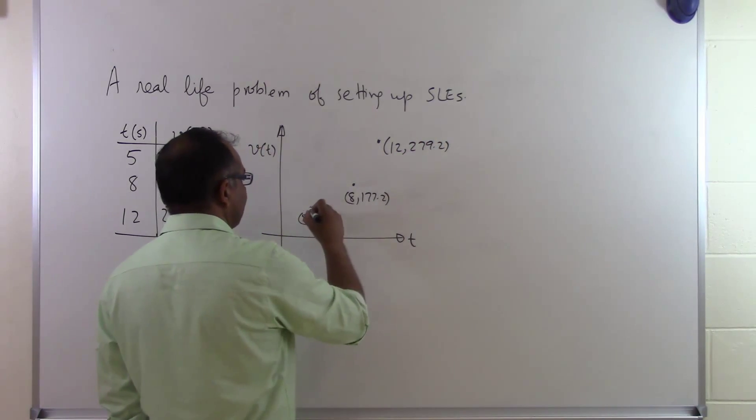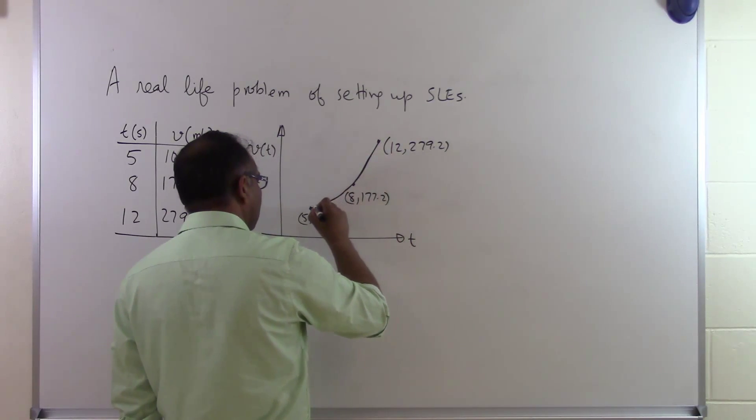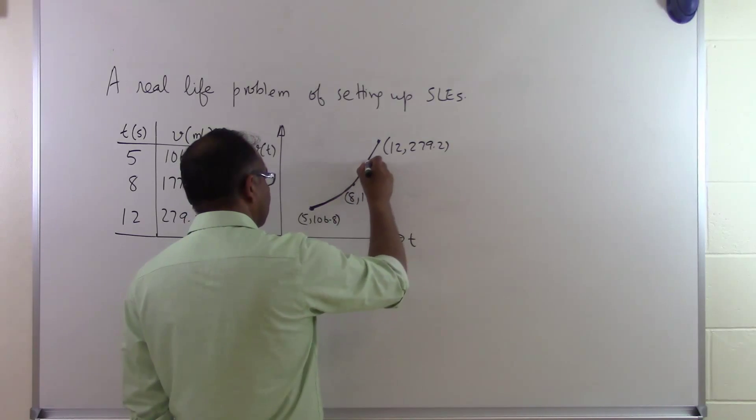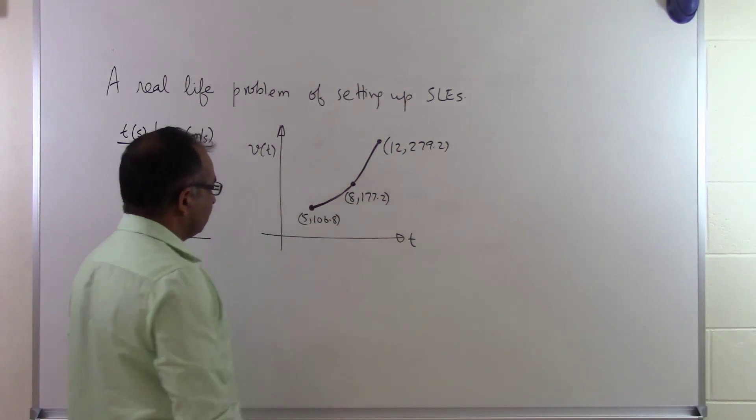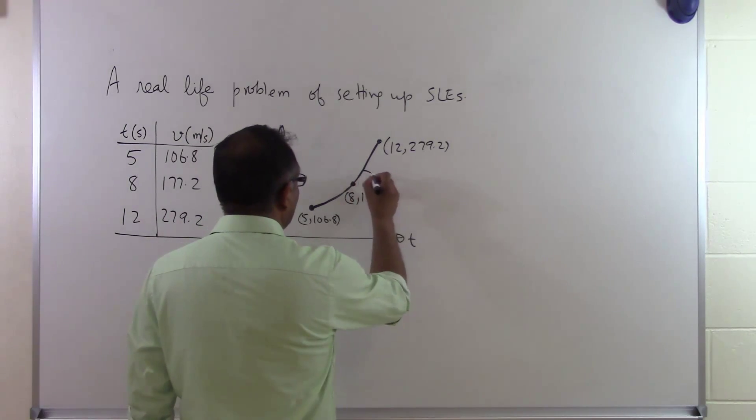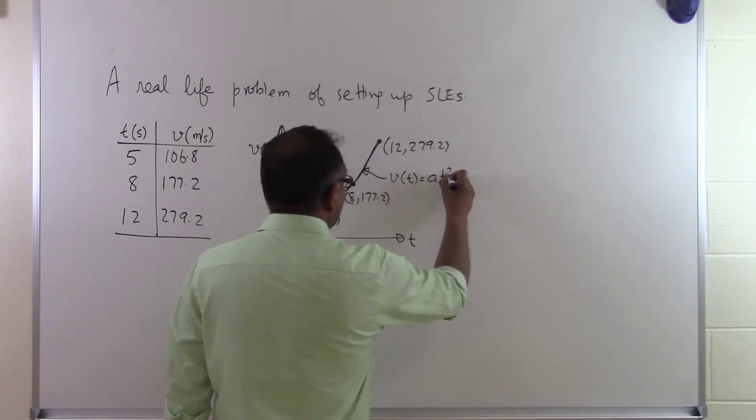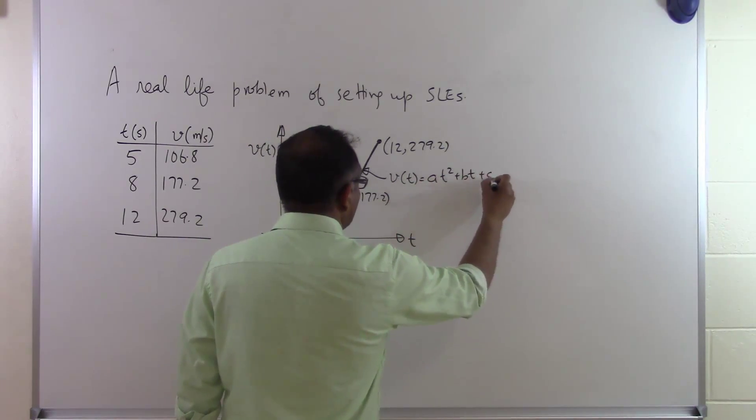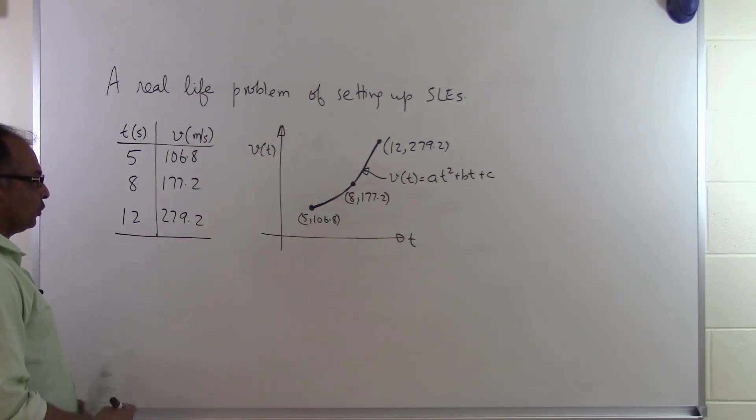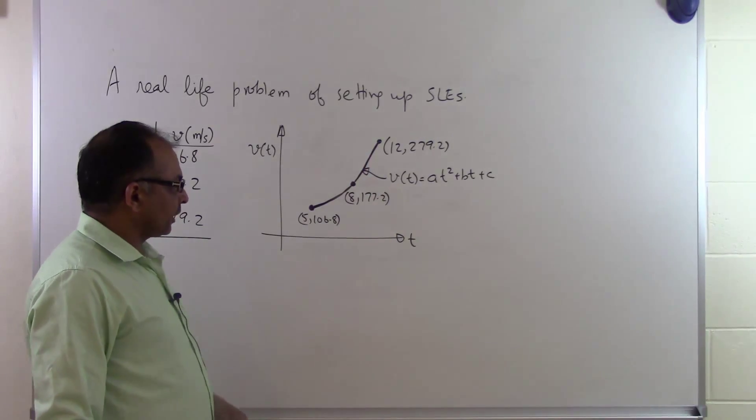What somebody is asking you is to draw a second order polynomial. I want you to have a velocity profile or velocity curve which is a second order polynomial going through these three points. If we call that velocity profile V(t) = at² + bt + c, that's our second order polynomial.